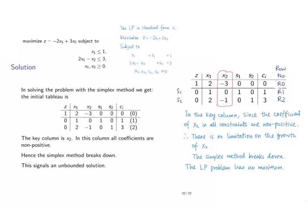Therefore, we cannot identify a key row and the simplex method breaks down. The linear programming problem has no maximum.